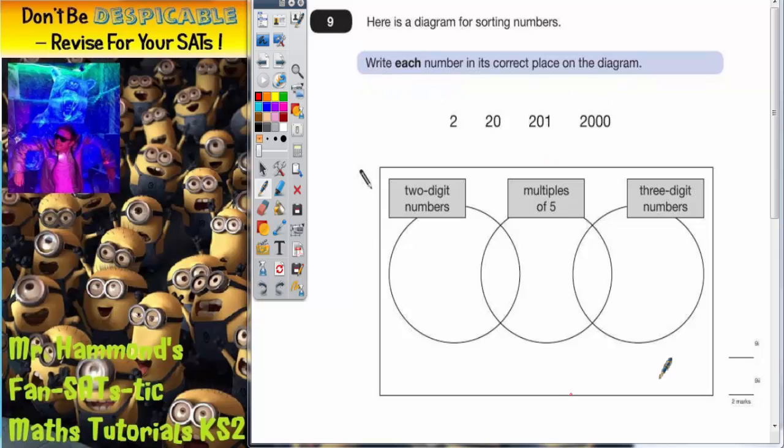Now let's just double check what this diagram means. So we've got 2 digit numbers in this circle, multiples of 5 in the middle circle, 3 digit numbers in the end circle.